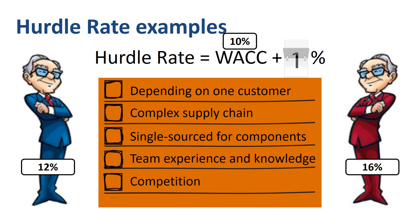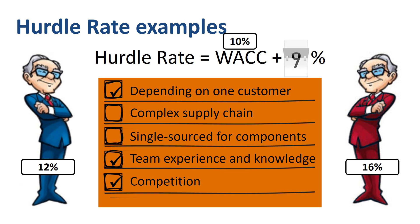For project A, the first, fourth, and fifth risk items apply. Some of these can be remedied — for example, the company could put a stronger team together to lead the project, which will reduce the risk. That's a trade-off between resources and risk.